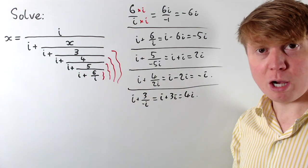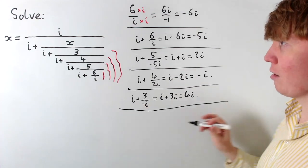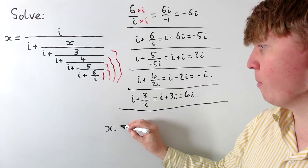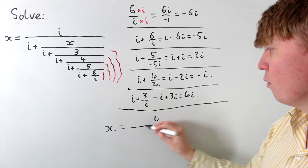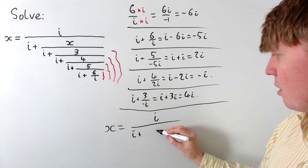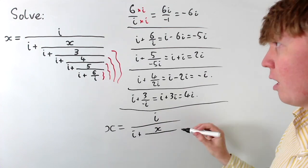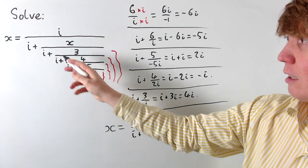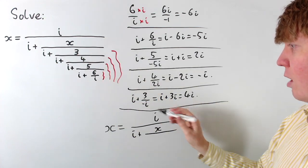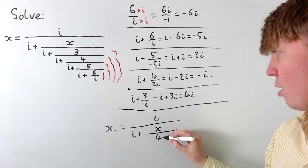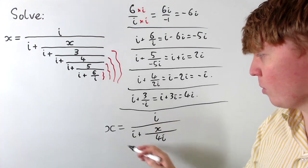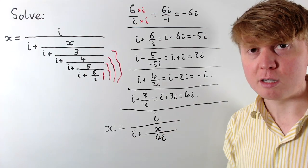And then we've got a nicer looking equation which we can start to solve now. So let's just write this out, the whole equation then becomes x equals i over i plus x over, and then we've worked out everything underneath the x is going to be i plus 3 over negative i, which gives us our 4i here. So we'll clear some space and then we'll be able to properly solve this.